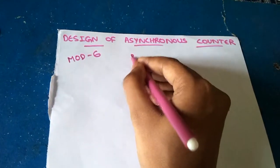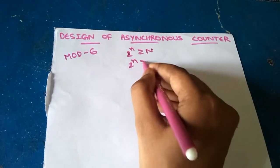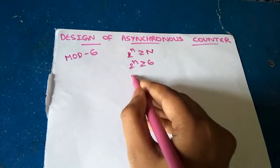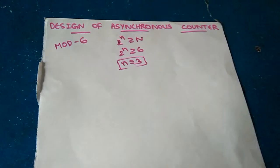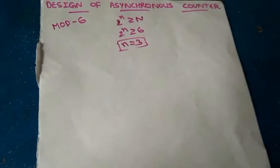So here also same formula we will use: 2^n ≥ N, then 2^n ≥ 6, then for n = 3, this case will be satisfied. So 3 number of inputs and 3 number of flip-flops are required here.